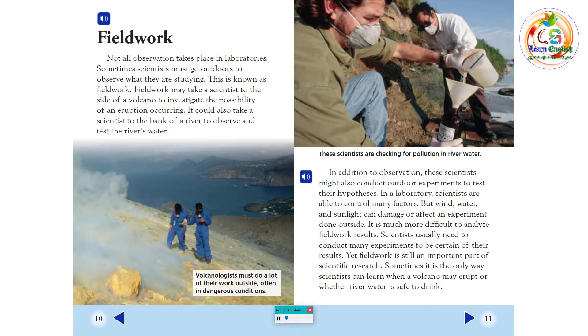Fieldwork. Not all observation takes place in laboratories. Sometimes, scientists must go outdoors to observe what they are studying. This is known as fieldwork. Fieldwork may take a scientist to the side of a volcano to investigate the possibility of an eruption occurring. It could also take a scientist to the bank of a river to observe and test the river's water.